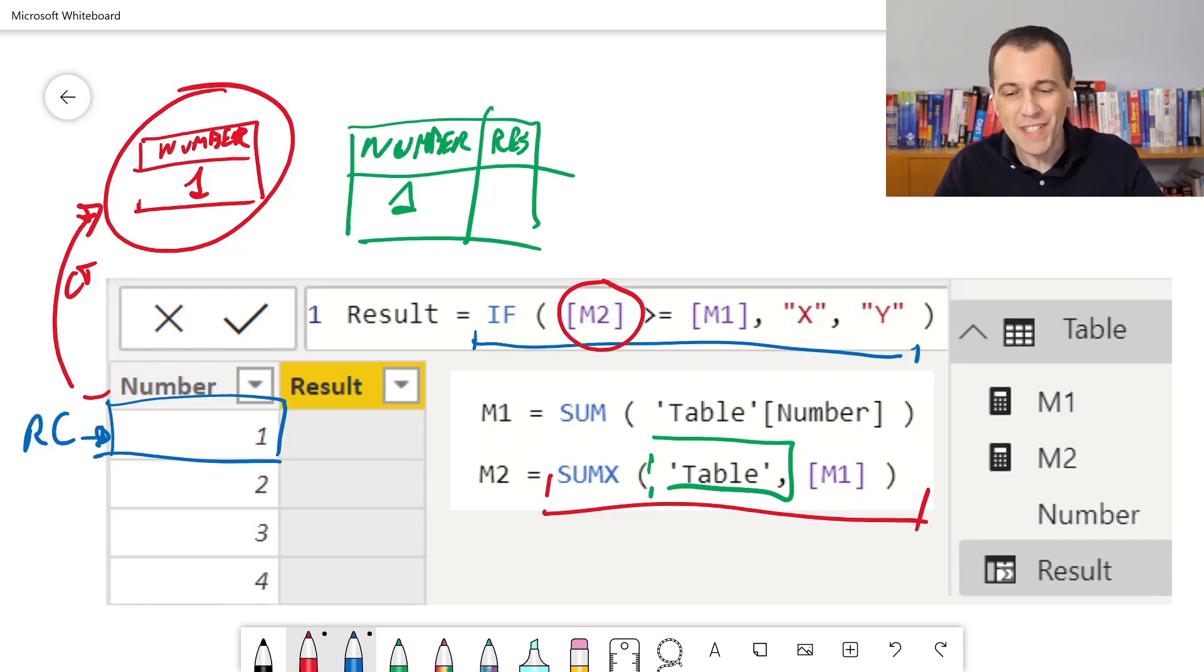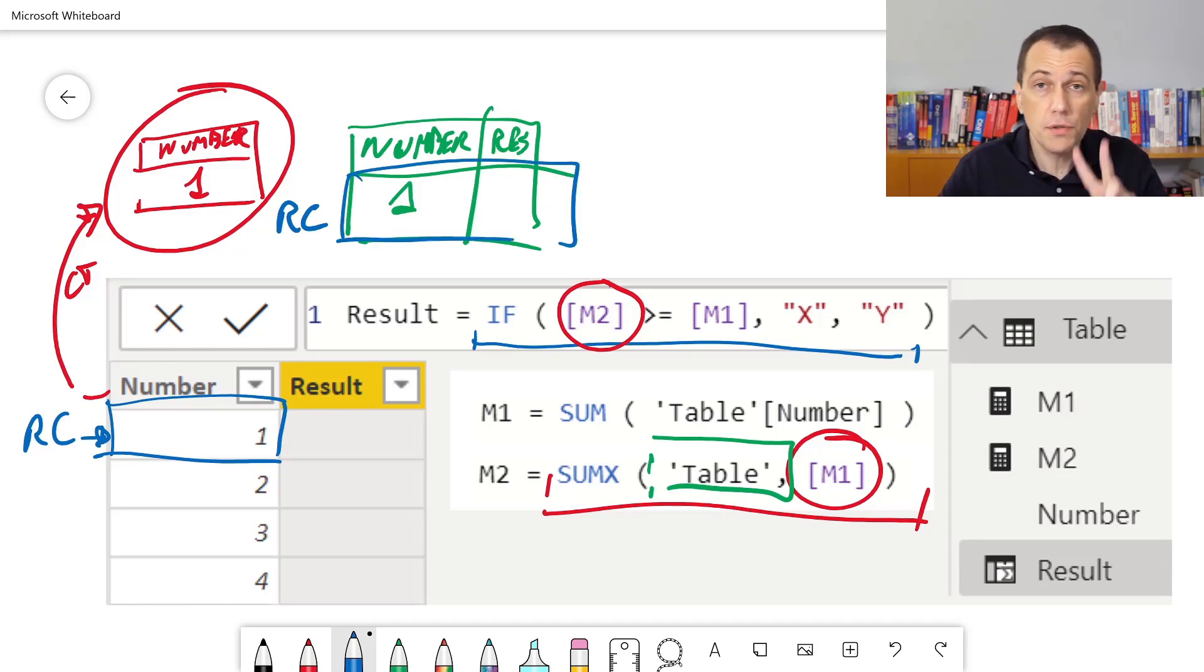For each row of this table, we have to evaluate M1. So, because we have an iterator, sumx, we have a new row context, but this time has two columns.